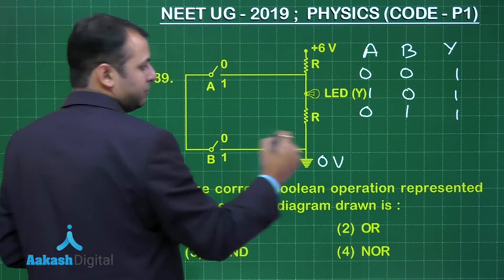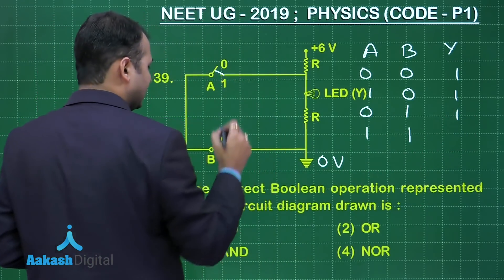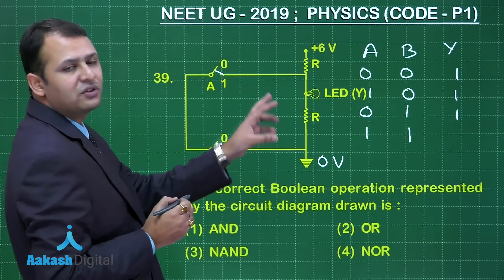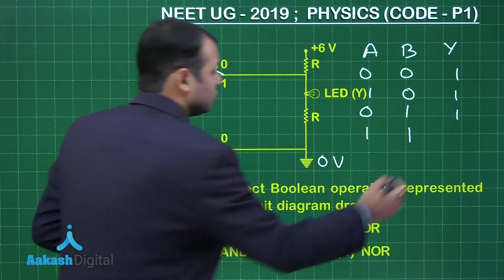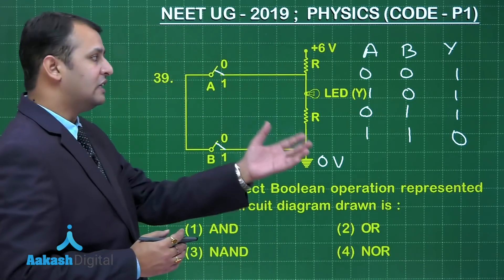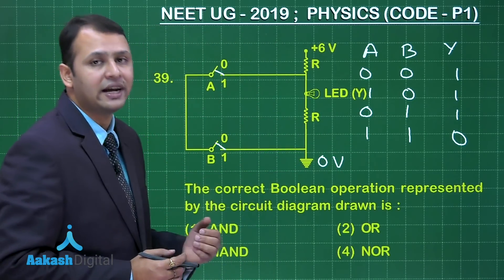If I close both of them that means 1 and 1. If I connect them both then the potential difference across the LED will reduce to 0. So in this case the bulb will not glow. And simply this is the operation for NAND gate.